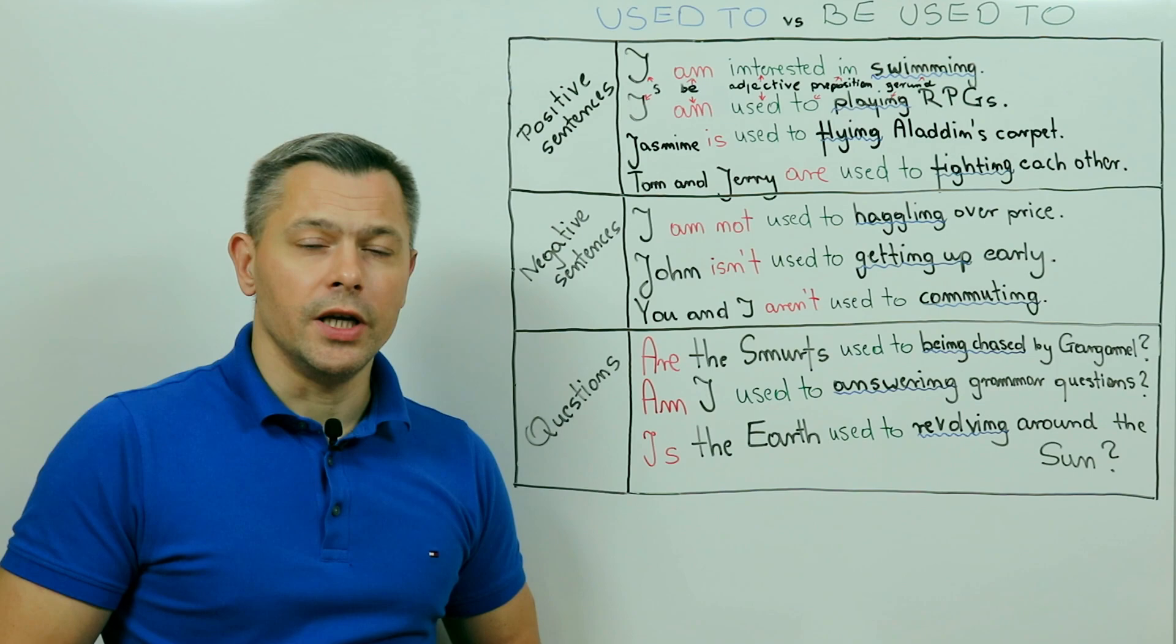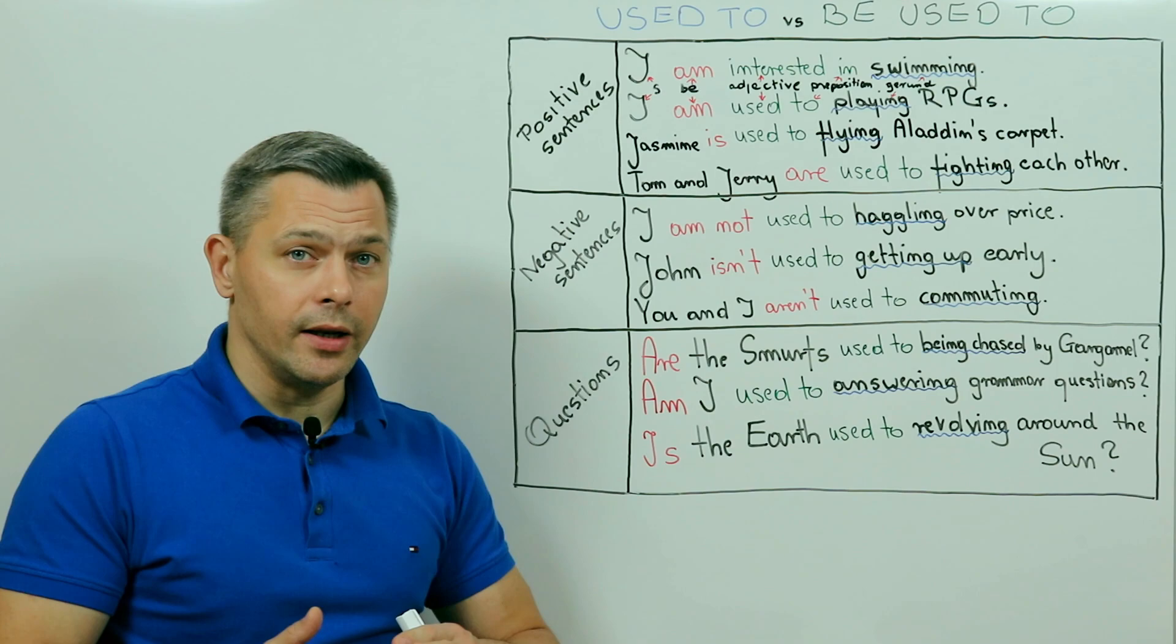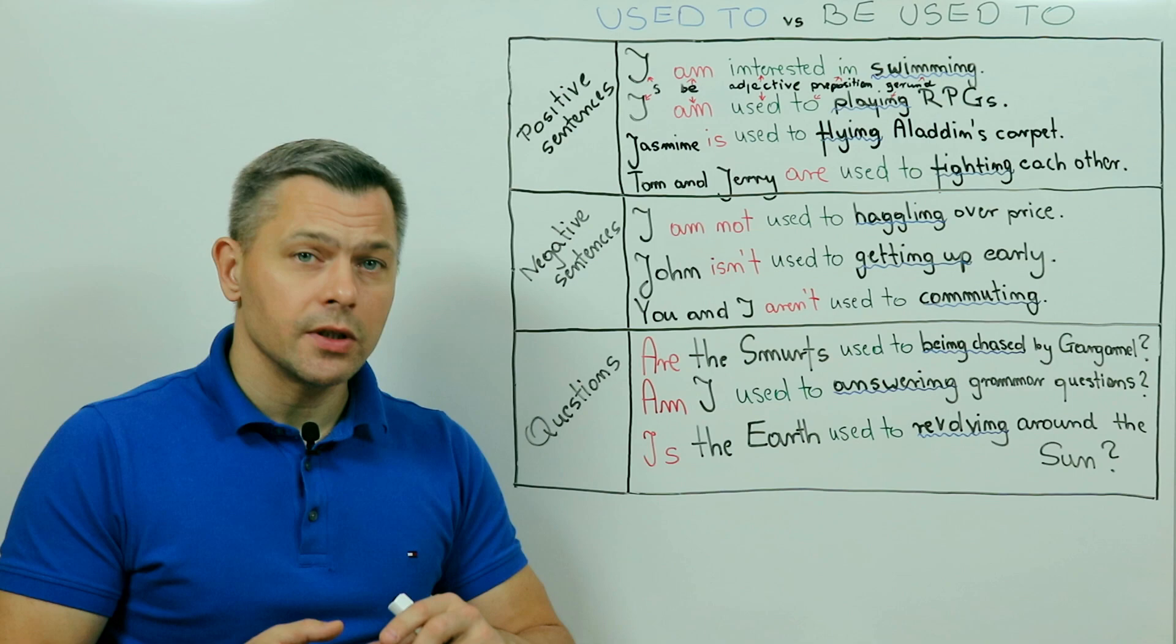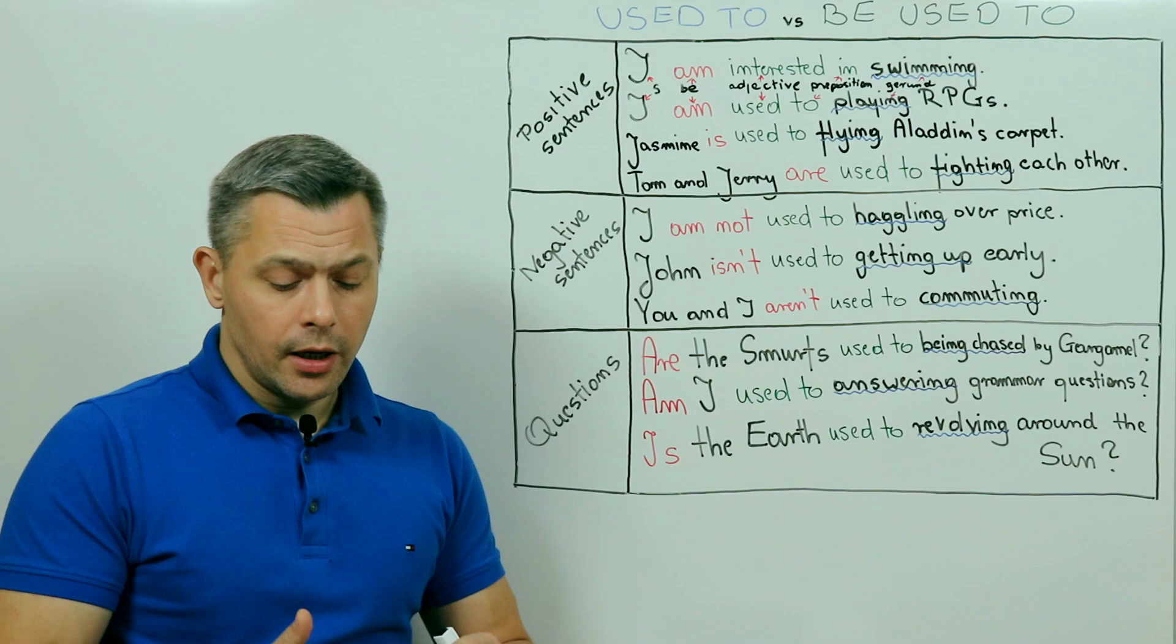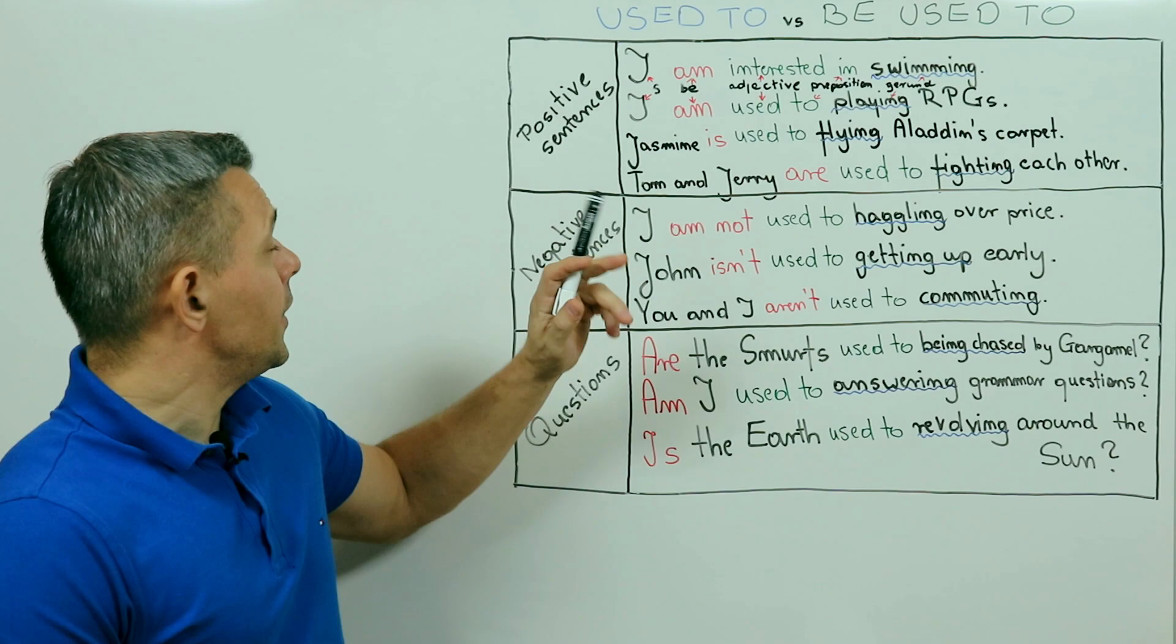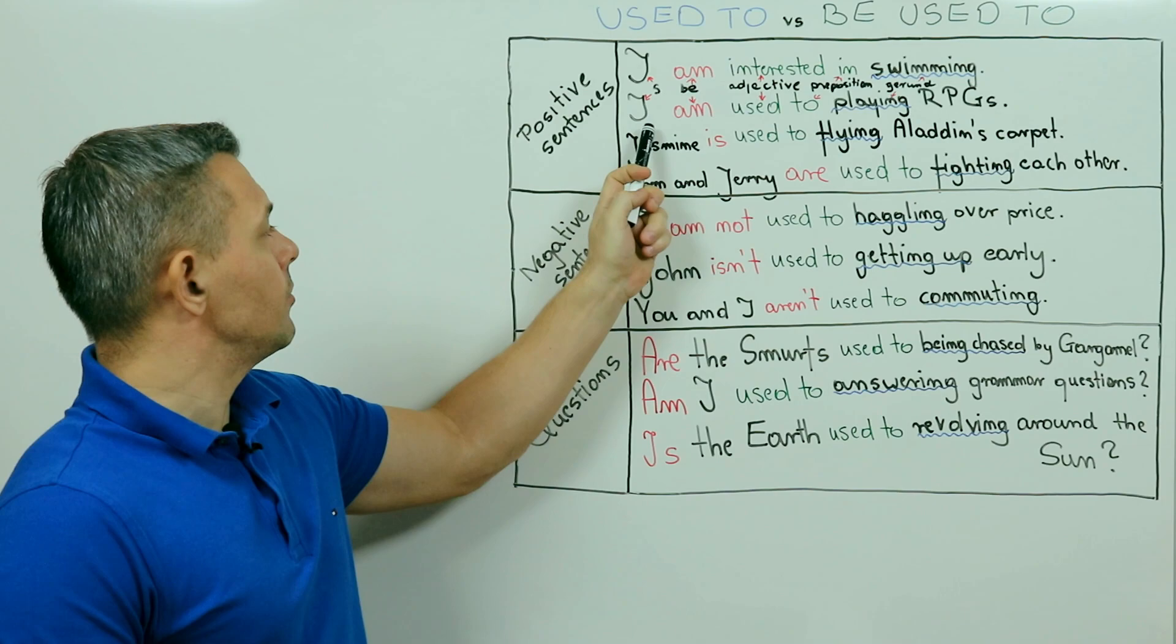And how about what differs the two when it comes to how and when they are used? Used to expresses past discontinued habits and routines, while be used to talks about present, past, and future, and talks about things people are accustomed to, people are familiar with. Like here. I am used to playing RPGs. Again, subject, be, adjective, preposition, and gerund.